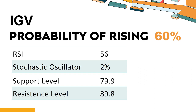IGV's short-term support level is 84.4. If it falls below this level during the session, it will have a chance to test 79.9. IGV's short-term resistance level is 88.1. If it breaks through this level during the session, it will look up to 89.8.